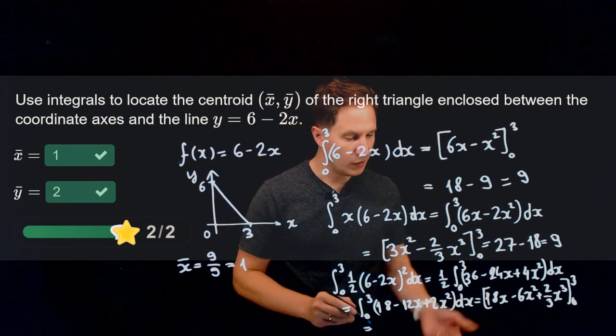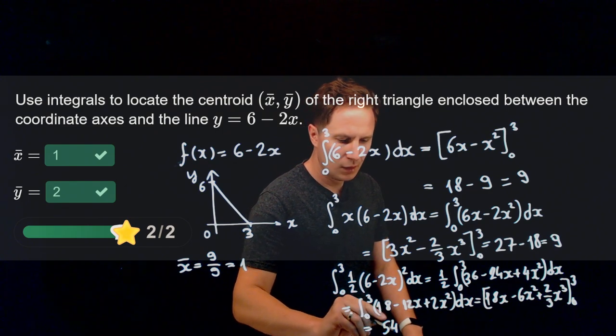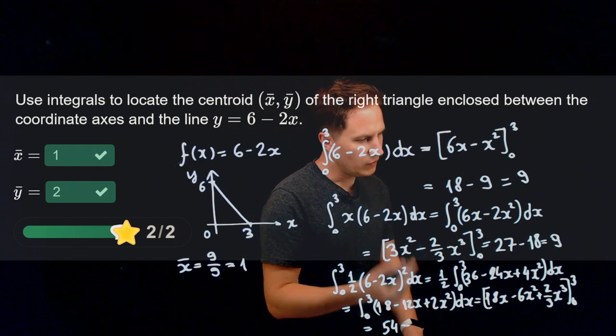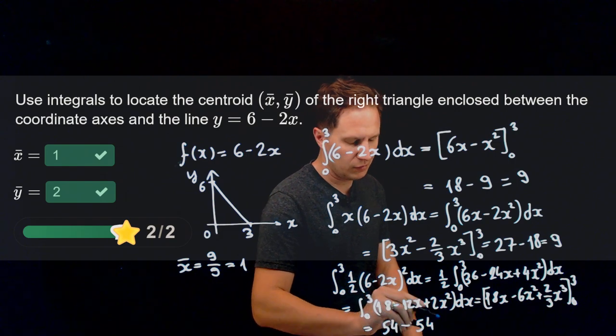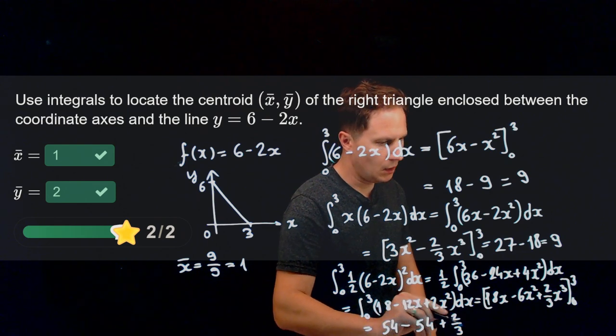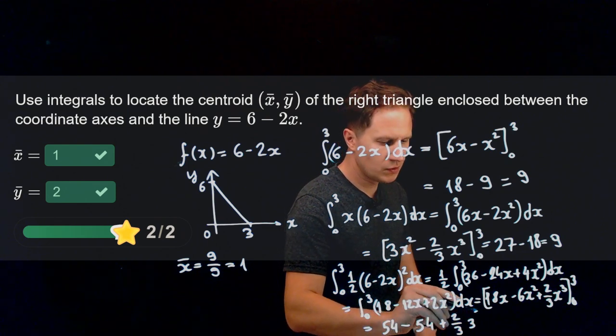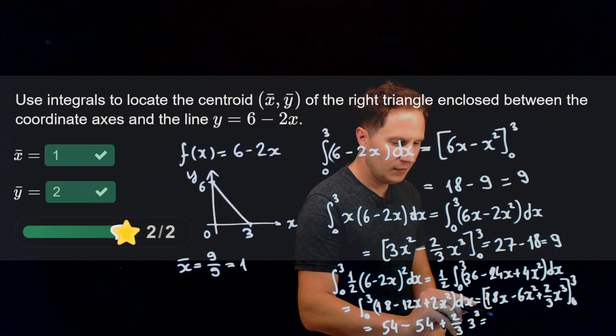Well, when x is equal to 3, we get 18 times 3, that's 54 minus 6 times 3 squared, so that's 6 times 9, that's again 54, plus 2 thirds of 3 cubed, so that's 27. 2 thirds of 27 is 18.